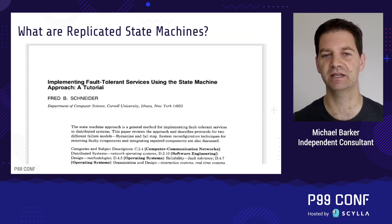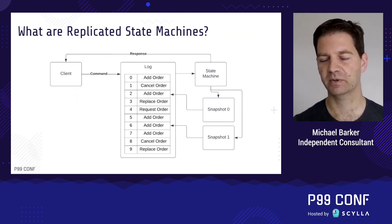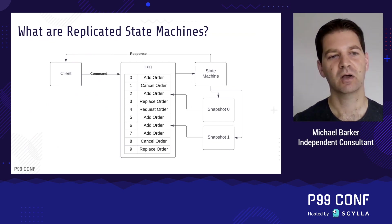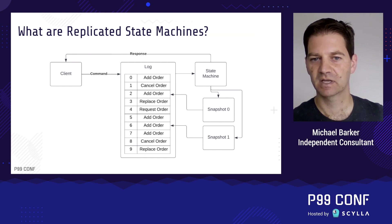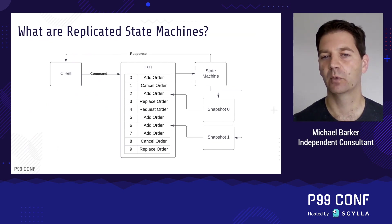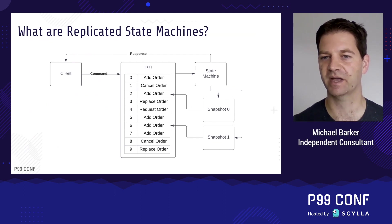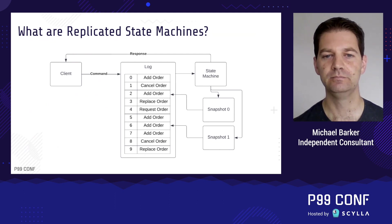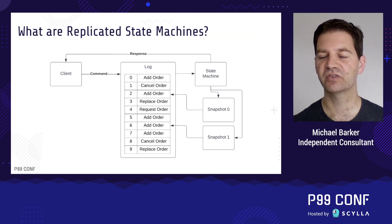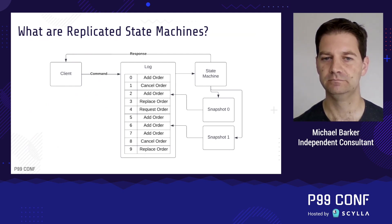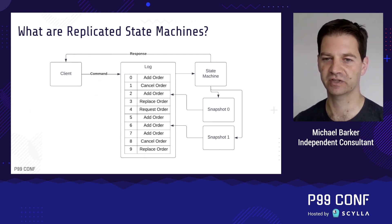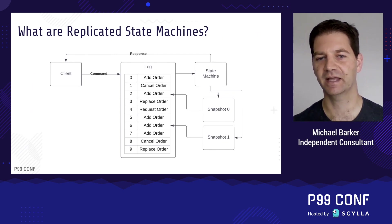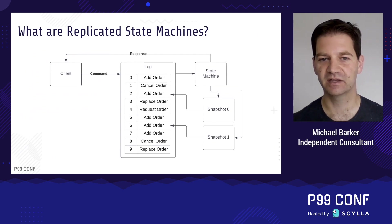So what is a state machine? What do we actually need in order to build one? It consists of three things. First, a set of state variables — essentially the data for our service. This can be as simple as an in-memory counter or as complex as an object model for a financial exchange. Second, a set of serializable commands that can be written to an ordered log. Third, a suite of deterministic logic that can be used to apply those commands to our set of state variables. The key word here is deterministic — it's determinism that gives us the fault-tolerant behavior.